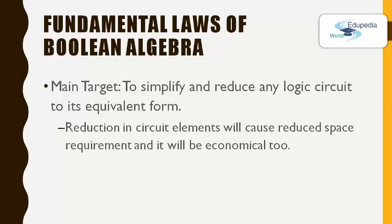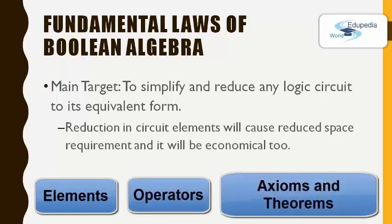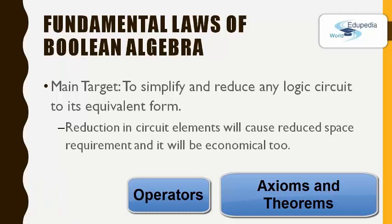Now, the Boolean Algebra is made up of three things. Number 1, Elements. Number 2, Operators. Number 3, Axioms and Theorems. Elements means the variables or constants with the value 1 or 0. Operators means AND, OR, and NOT.